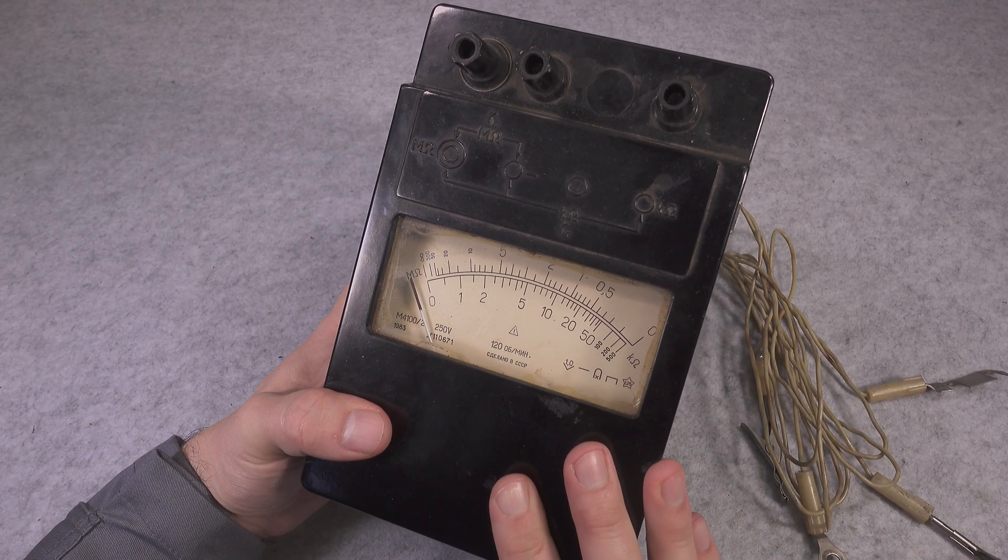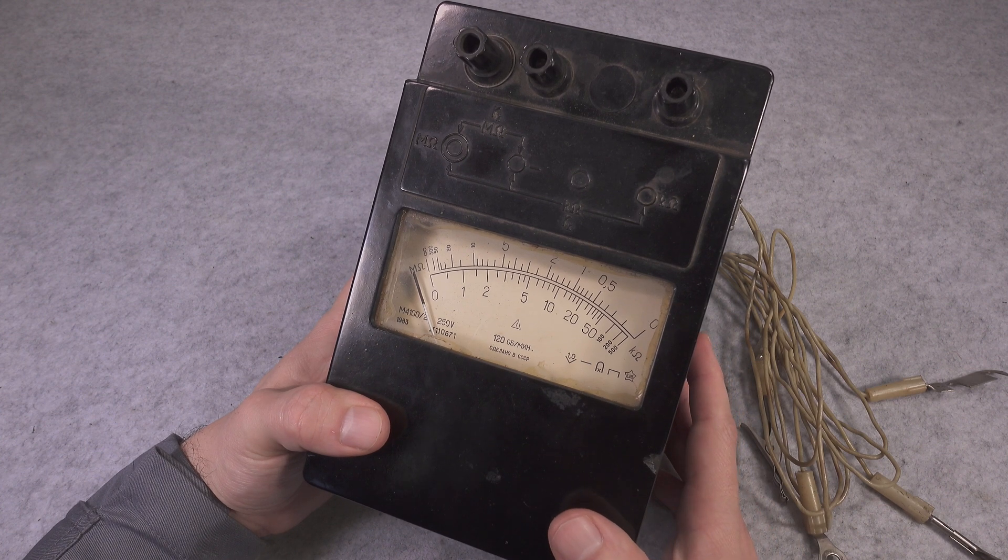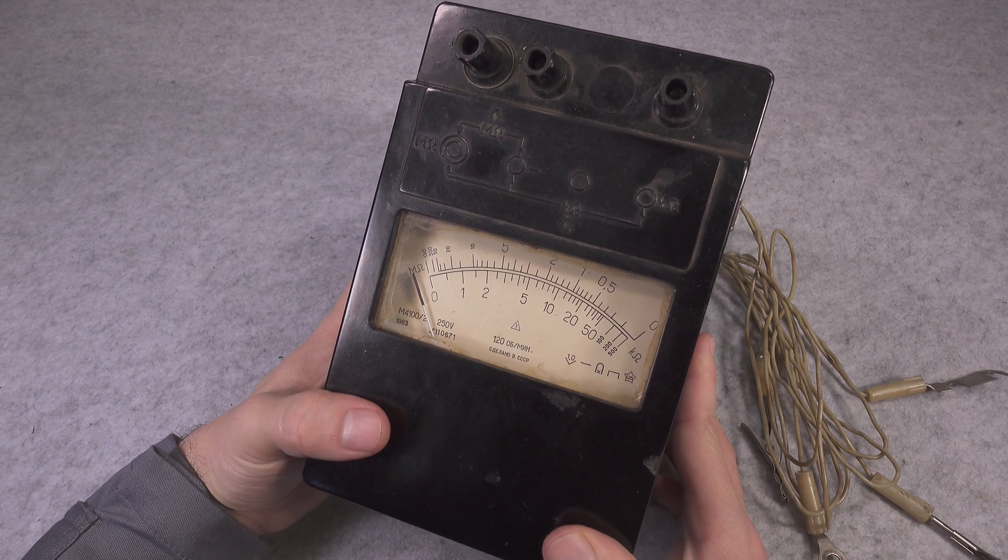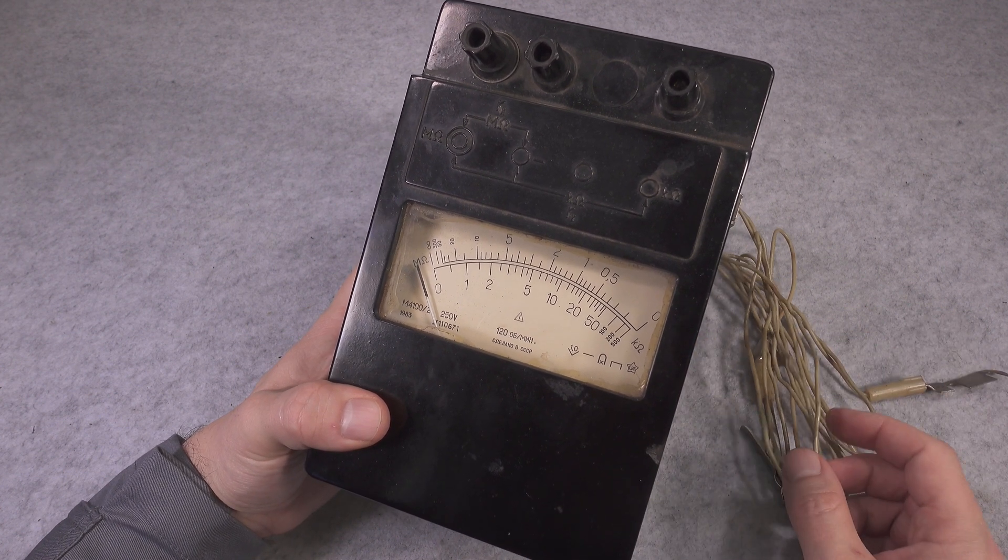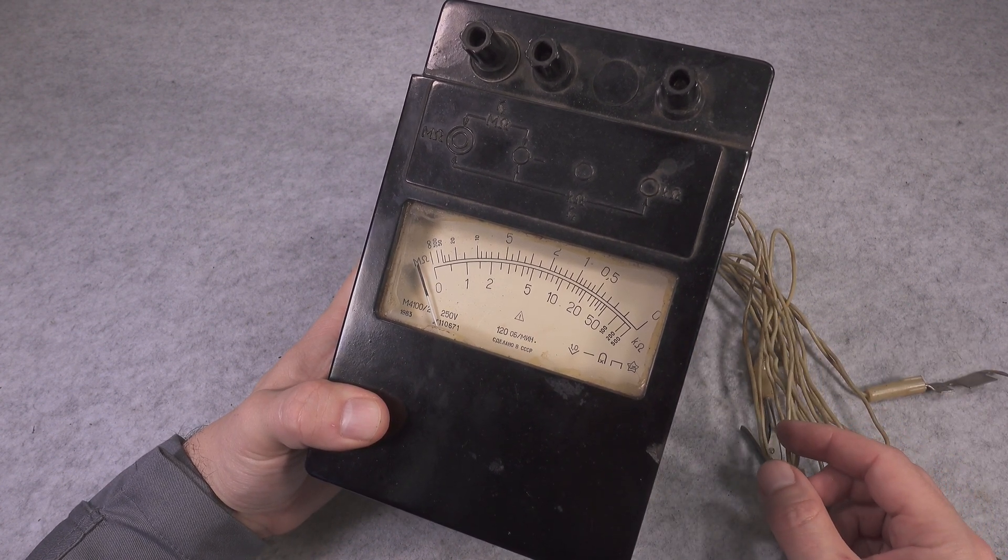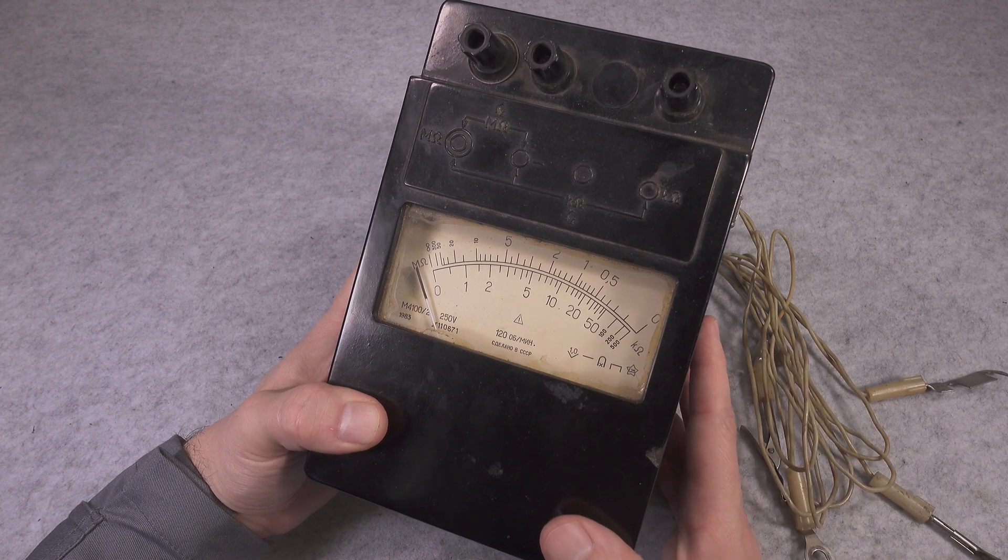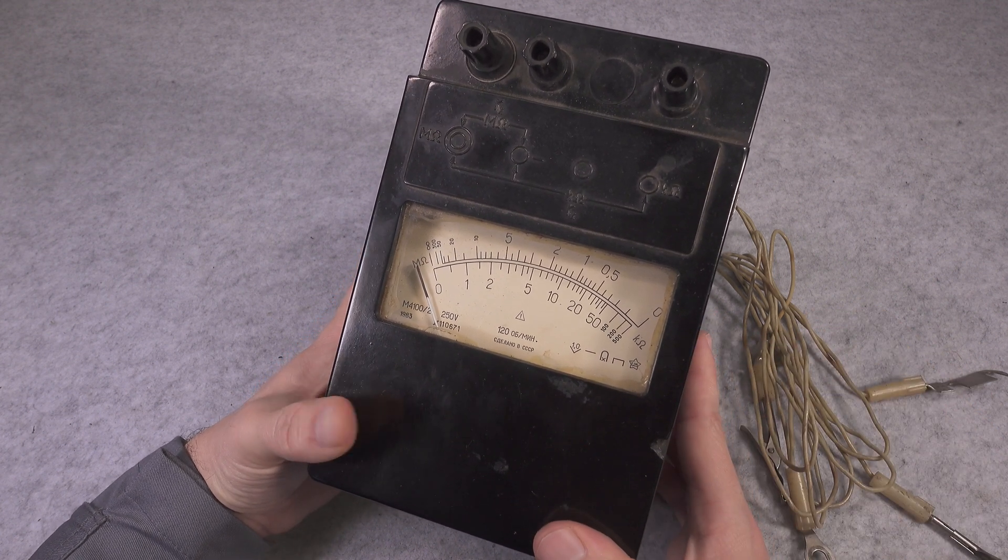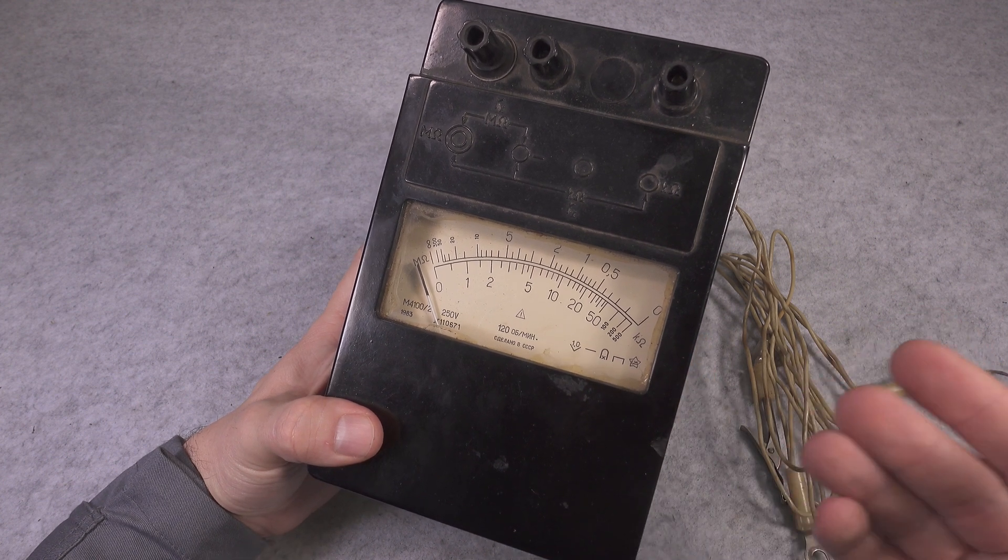If you grab a regular digital multimeter that will be using 3 volts or 1.5 volts as the measurement voltage, it might not be enough to jump across and it will not show you the real condition.